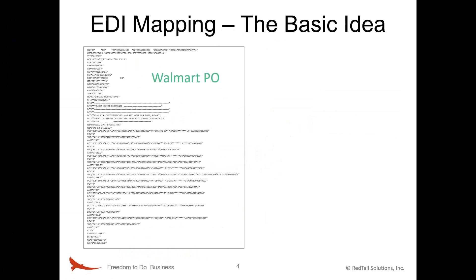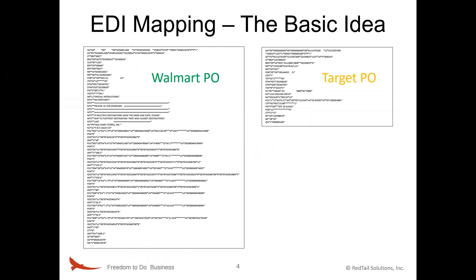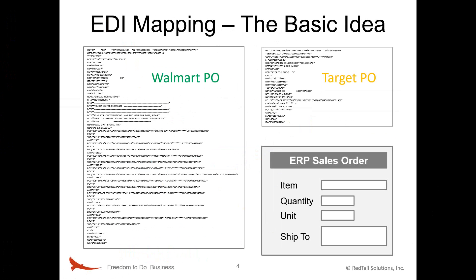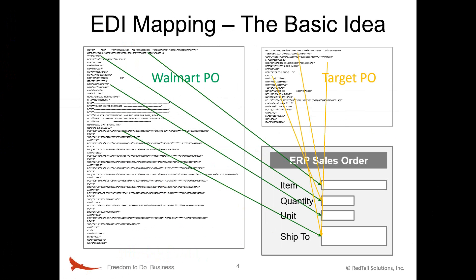Let's look at an example of two purchase orders being received from different customers. These impossibly small font panels happen to be real EDI documents from Walmart and Target for similar goods. The information in these documents must be placed in the correct fields in the supplier's ERP sales order so that the order can be accepted and fulfilled. Although these POs are for similar goods, notice that there's no similarity in where the data is found within the EDI document.